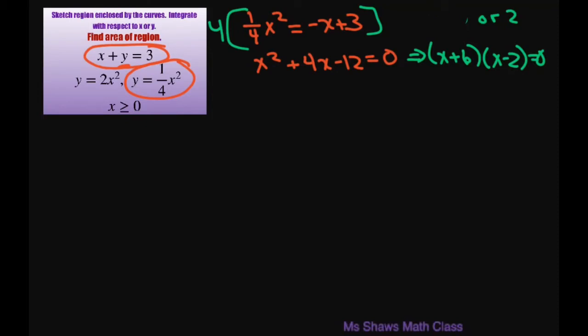This is negative 6. We don't want the negative 6 because we want x greater than or equal to 0. So at x equals 2, our y is going to be 1. So we have the point (2, 1).